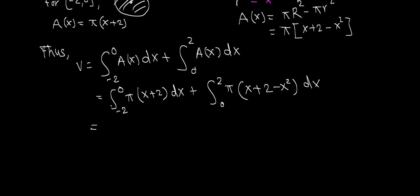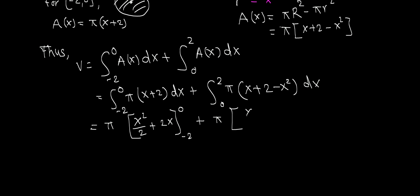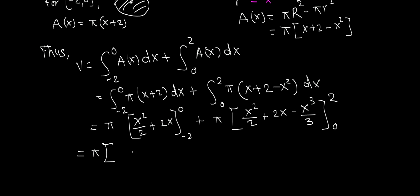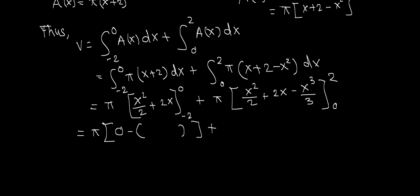Let's evaluate these two definite integrals. We can pull pi outside. The integral of x plus 2 is x squared over 2 plus 2x, evaluated from negative 2 to 0. For the second integral: the antiderivative of x plus 2 minus x squared is x squared over 2 plus 2x minus x cubed over 3, evaluated from 0 to 2.